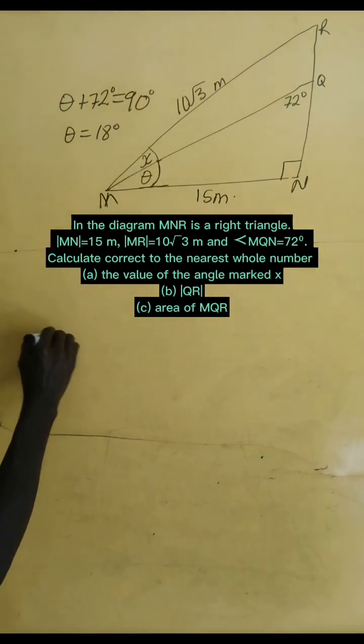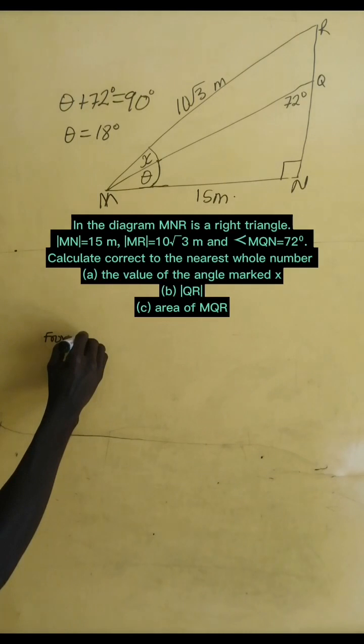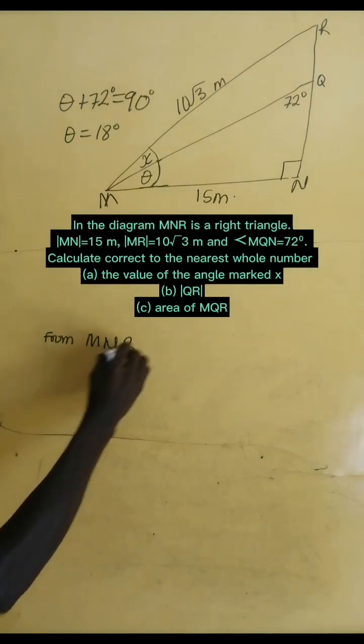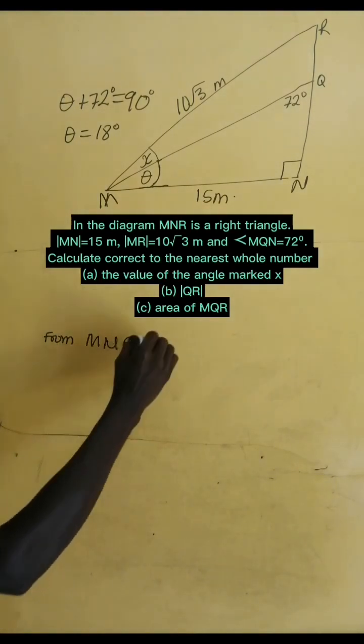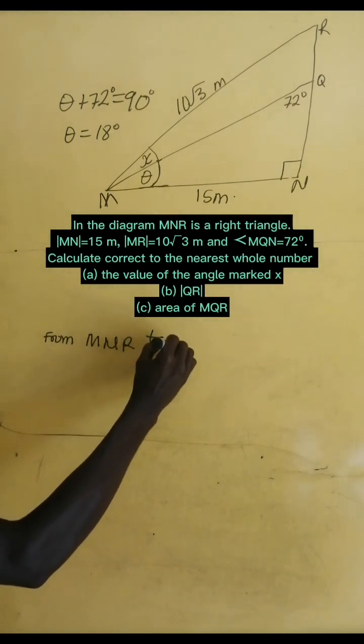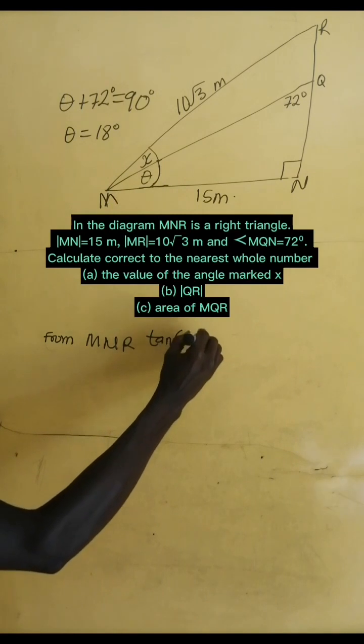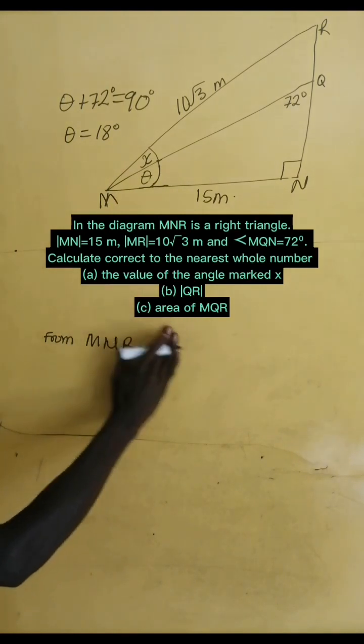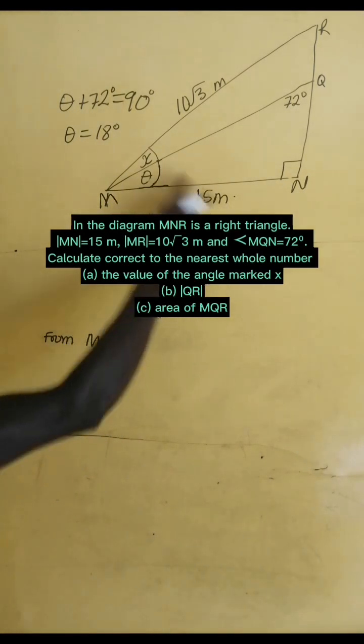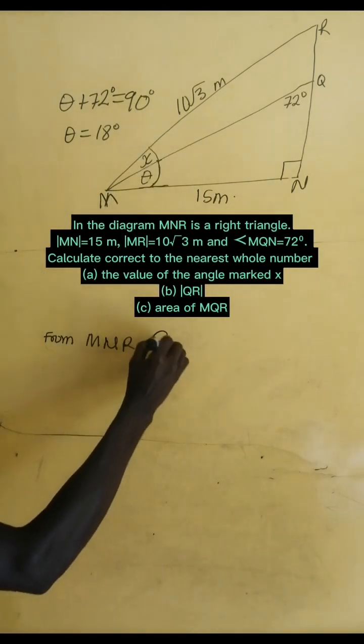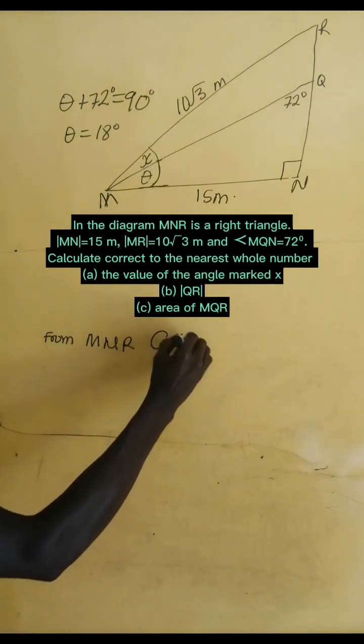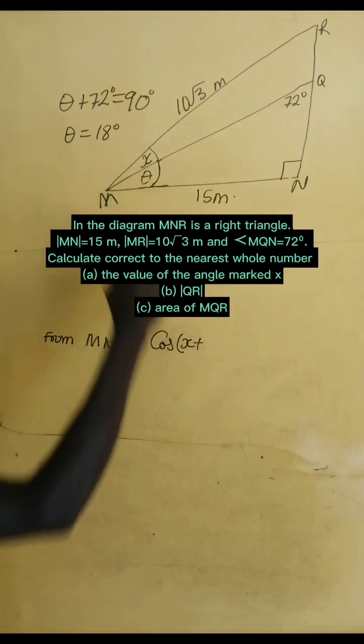Now, let's see. If we consider triangle MNR and then take tangent of X plus theta, that is the whole of that angle. Oh, sorry, sorry. Since we have adjacent and hypotenuse, let's take cosine of X plus theta, and theta is 18 degrees.